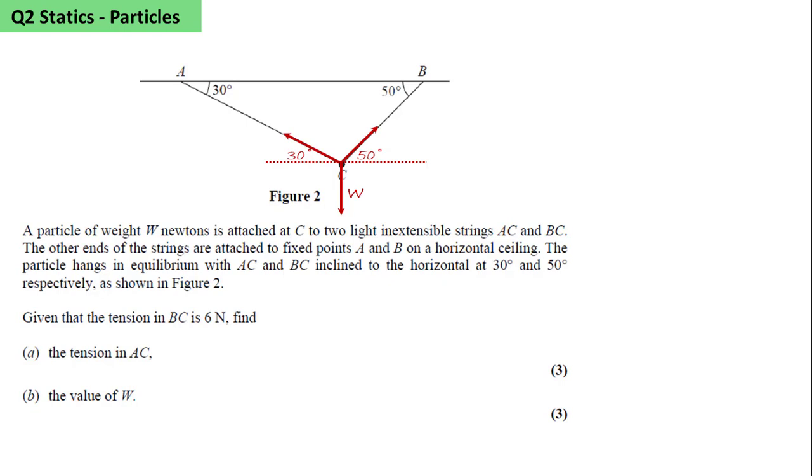Given that the tension in BC is 6, find the tension in AC. We resolve horizontally. We see that T cos 30 equals 6 cos 50. So T equals 4.45 newtons.